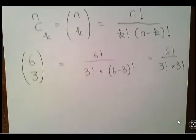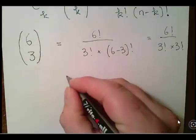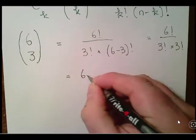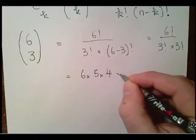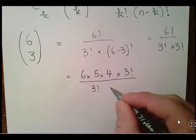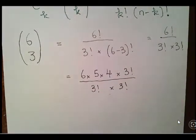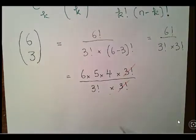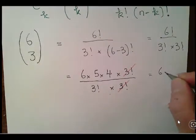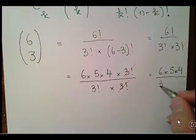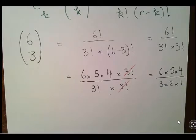What we want to do is simplify that expression. With the numerator, we express that as 6 times 5 times 4 times 3 factorial, all over 3 factorial times 3 factorial. You can see there very quickly that we can cancel out 3 factorial and 3 factorial.